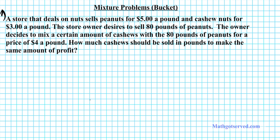We're going to go ahead and set up our buckets. On the left side of the equation, we're going to have individually priced buckets with just cashews and peanuts. And then on the right side, we'll have the combination. So let's draw a bucket for our peanuts first, and then we'll draw a bucket for our cashew nuts, and then the combination.